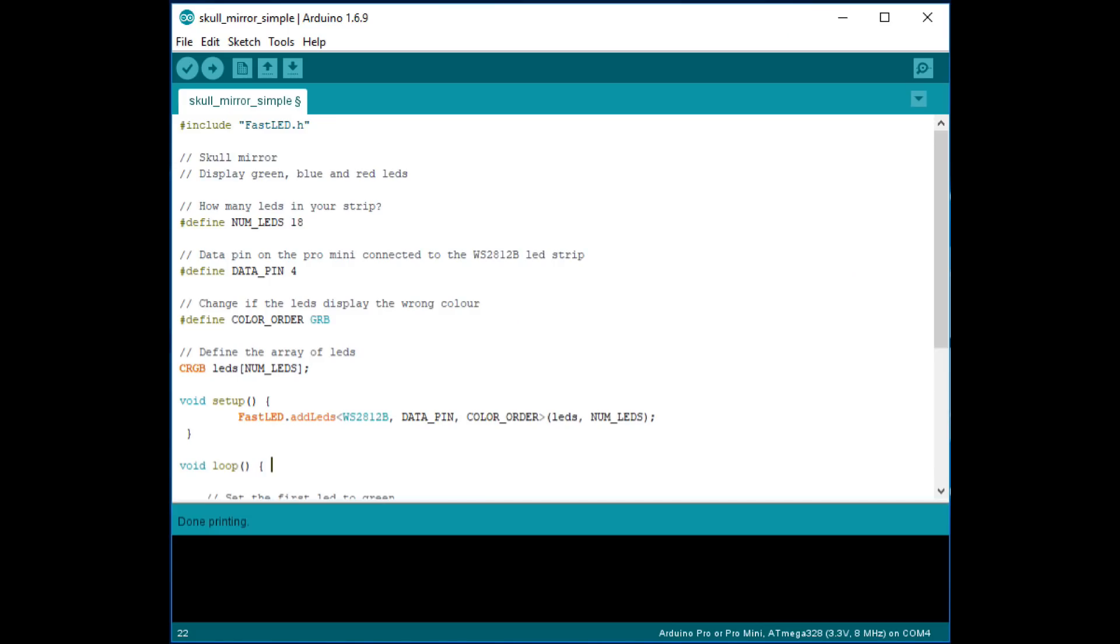Let's have a look at a simple sketch. First we define some constants that will make reading the rest of the sketch easier. The number of LEDs in the strip. The data pin on the Pro Mini that is connected to the LED strip. And the RGB color order of the LEDs. We define an array called LEDs to hold the LED strip data. And then set up the strip by telling the library we have a strip of WS2812B LEDs connected to data pin 4 and that the data for the strip is held in an array called LEDs.